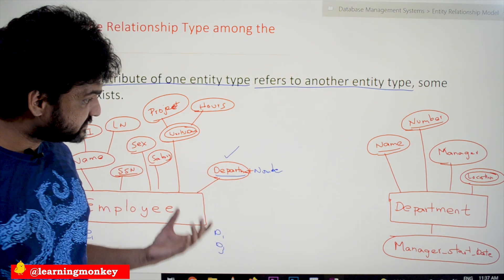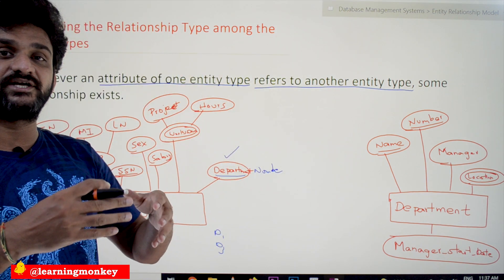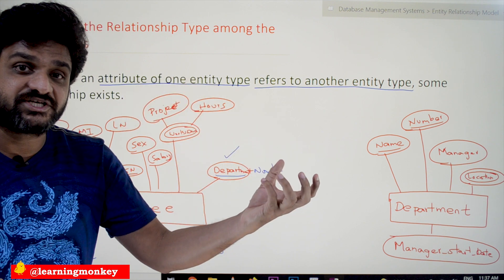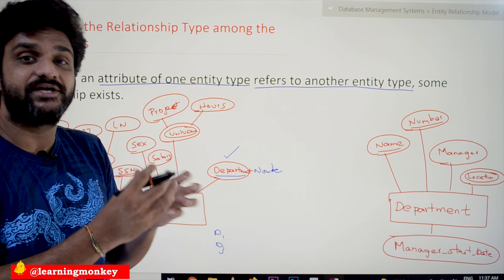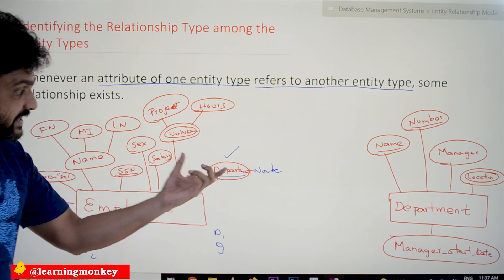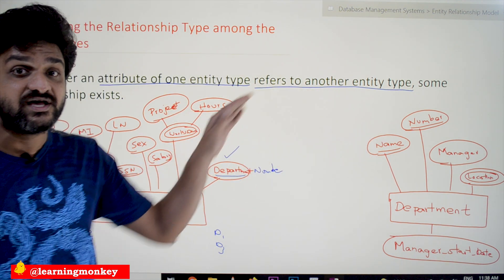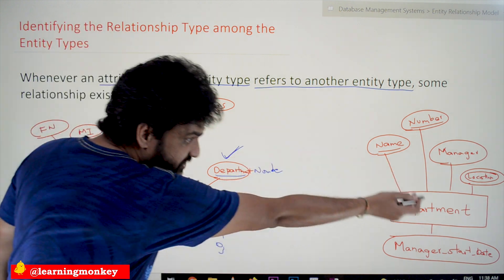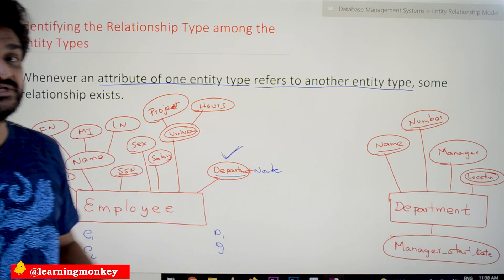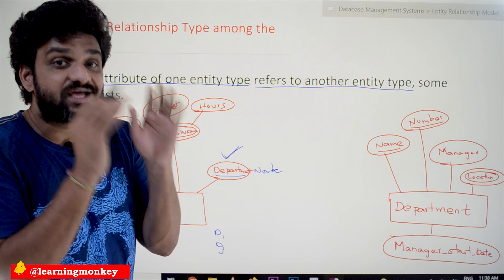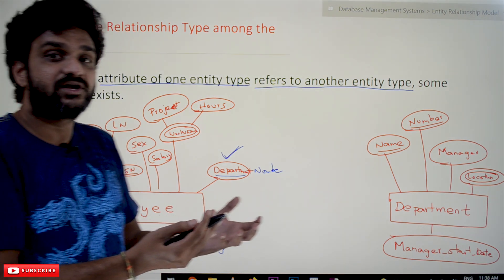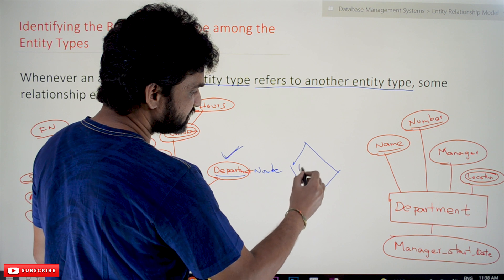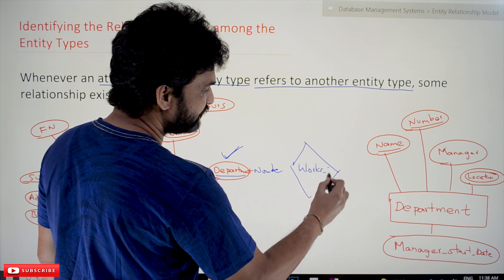How is a relationship type represented in an ER diagram? We have identified that there exists a relationship between these two entity types. Similarly, if you take all entity types at once, there exist several different relationship types. A relationship type is represented by a diamond symbol, within which we write the name of the relationship. 'Works for' is the relationship, and it is written inside the diamond symbol.